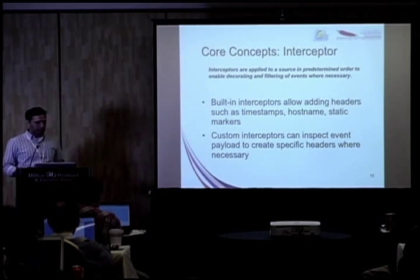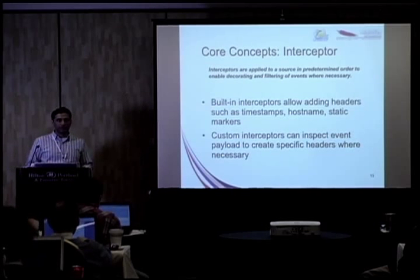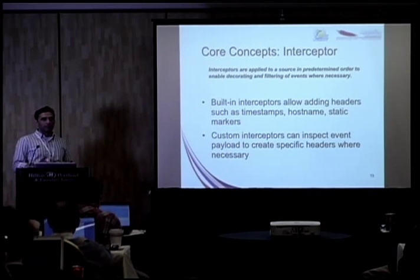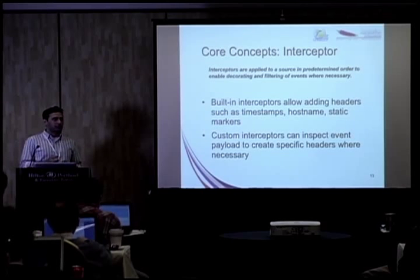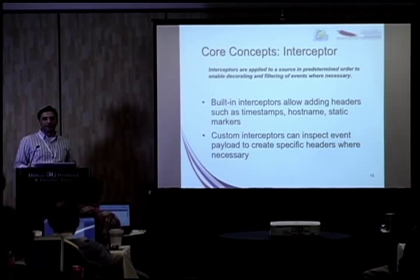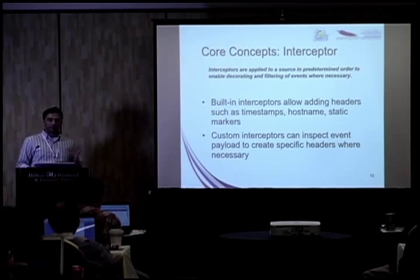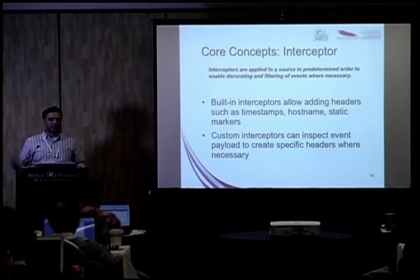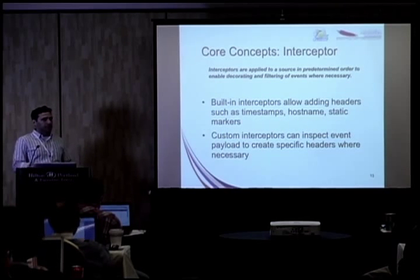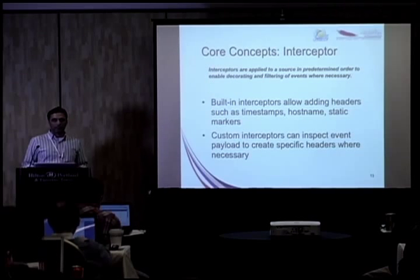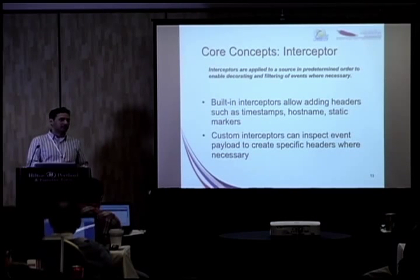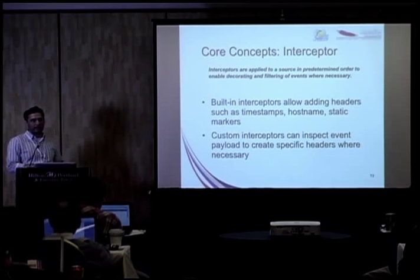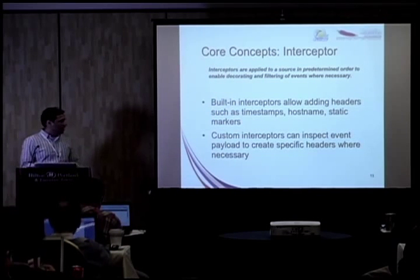There's also the notion of interceptors — a simple extension point you can use to introspect and inspect events and drop, filter, or maybe even modify them. Flume is not the best system for modifying events as they go along, but filtering and routing are well supported. You could inspect the event and apply headers based on their priorities, or whatever information matters to your use case. There are out-of-the-box interceptors: the timestamp interceptor, hostname interceptor, and static header interceptor.